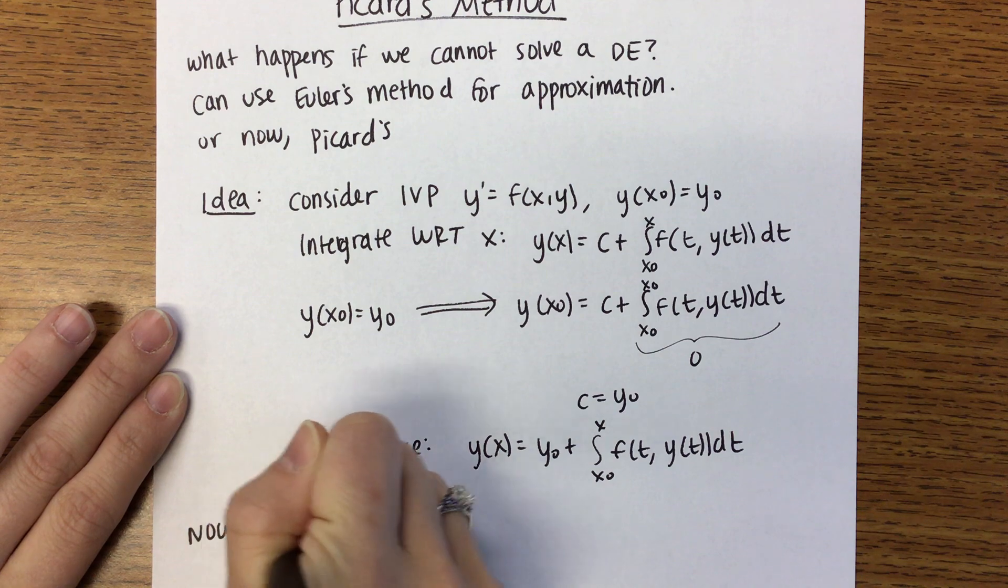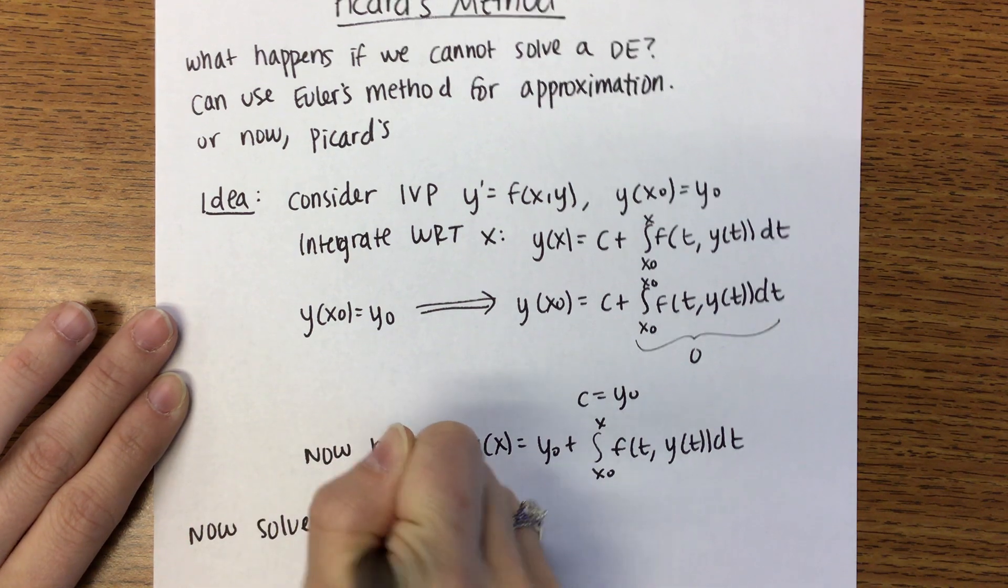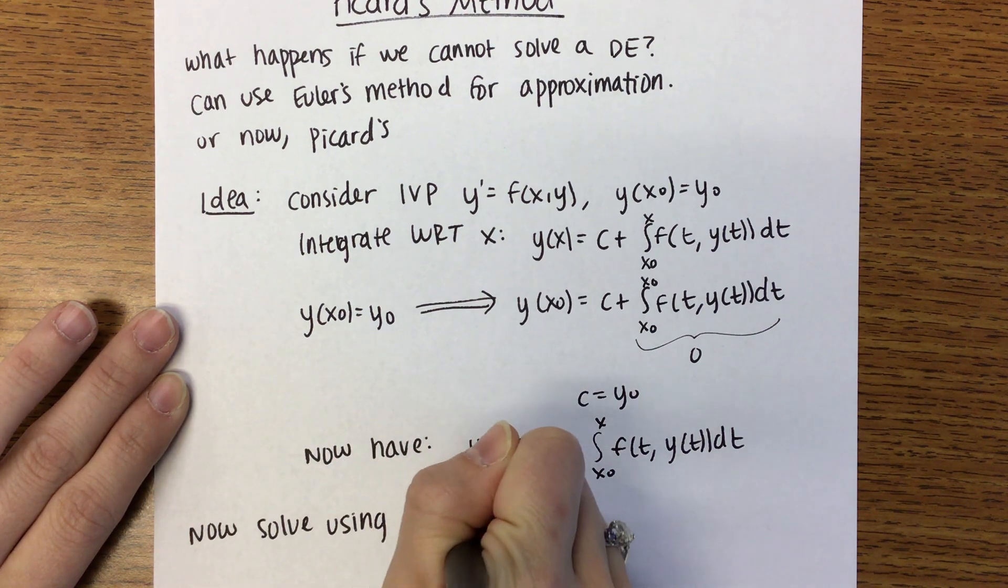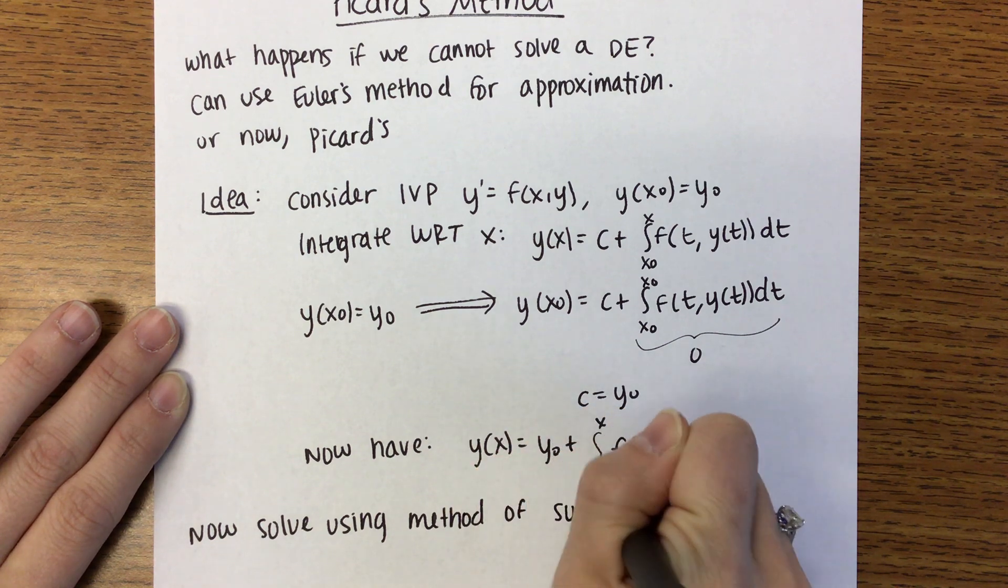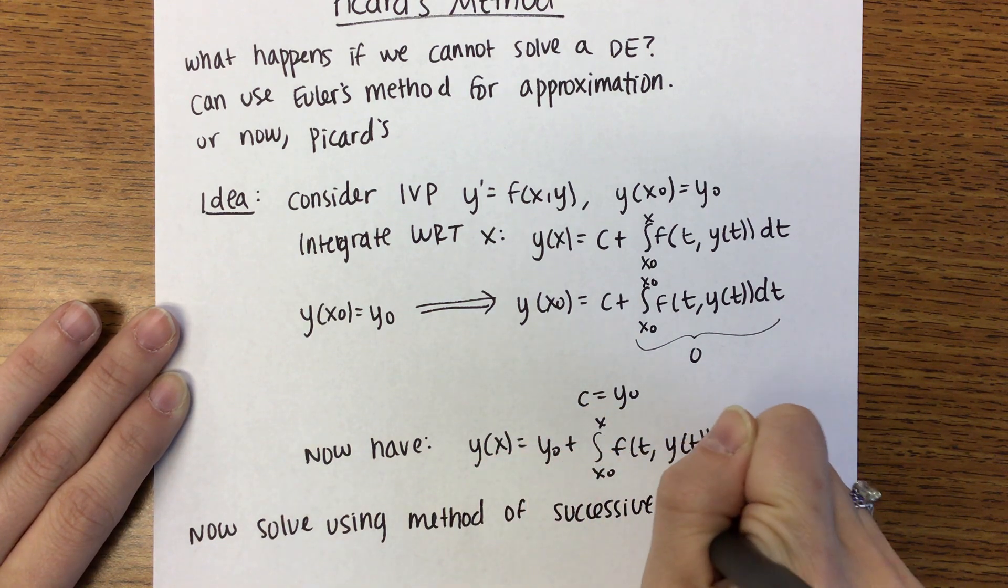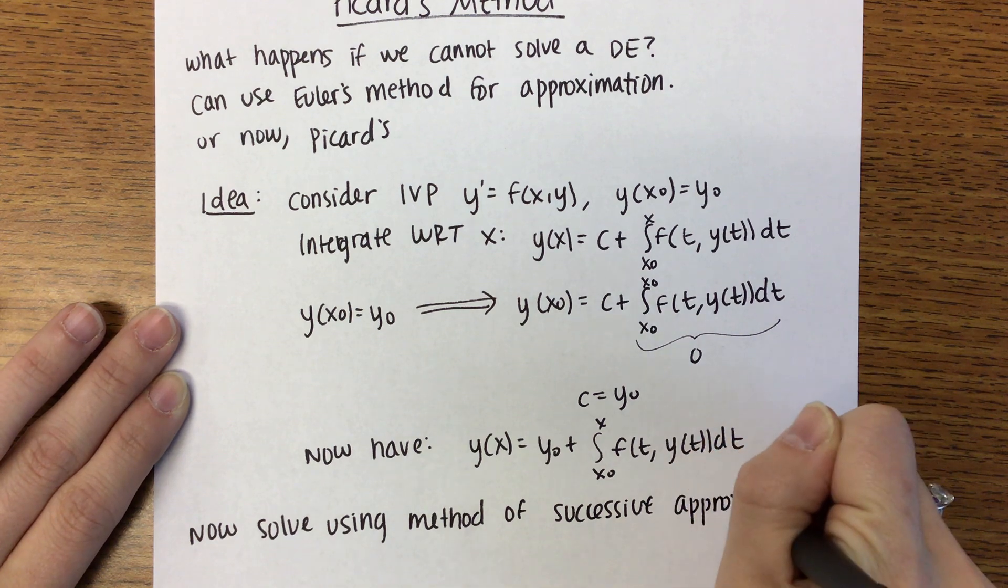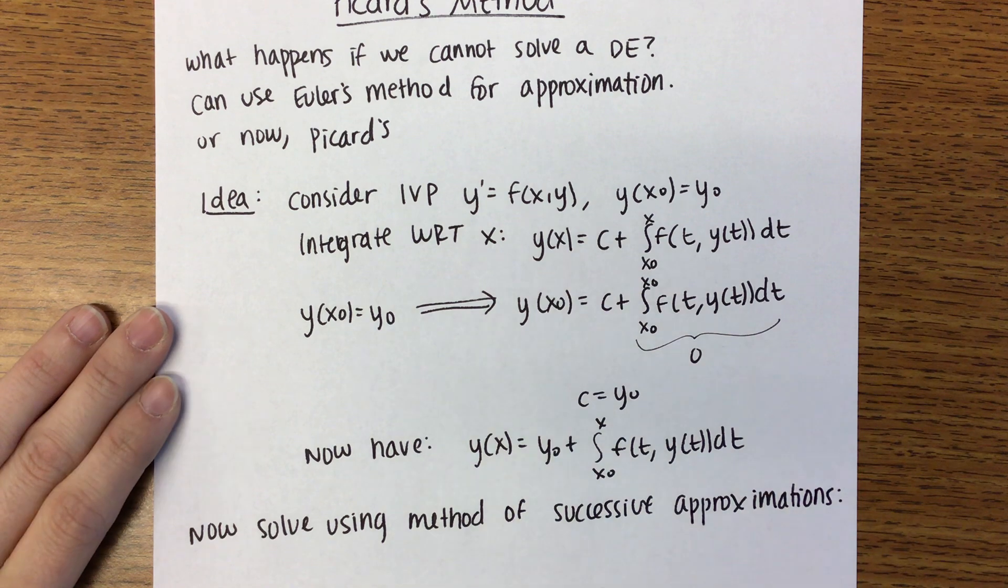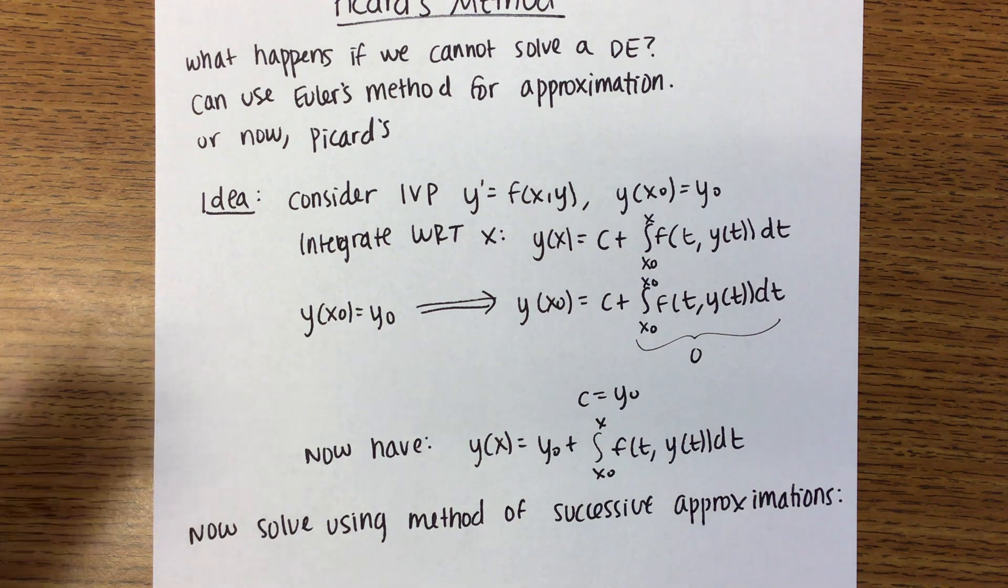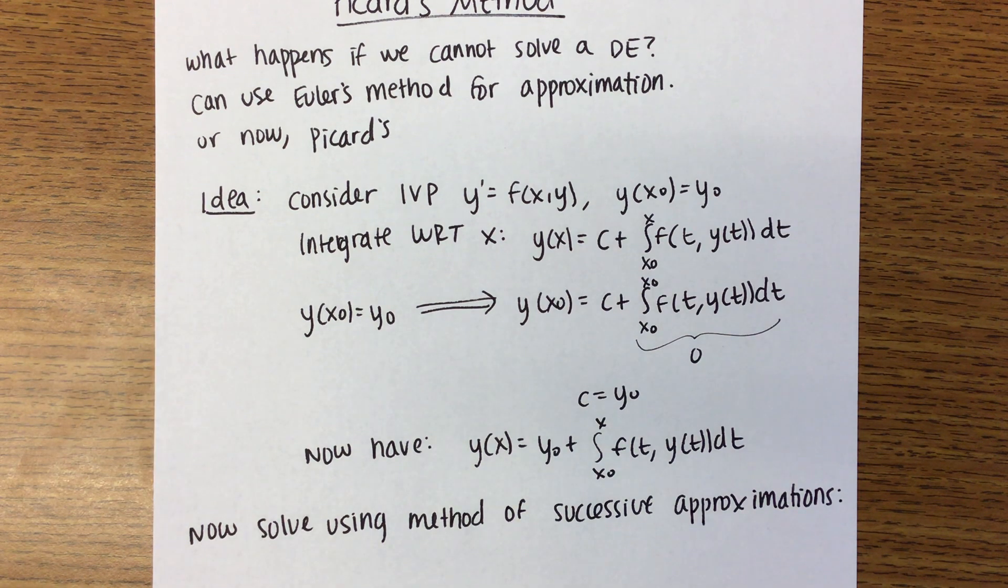So now where we go is we solve using the method of successive approximations. When you see that term, that means Picard's method. So oftentimes the question will not say Picard's method, it's going to say the method of successive approximations. That's Picard's method.